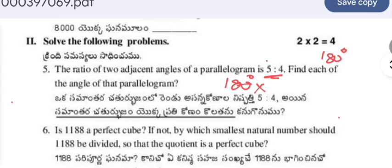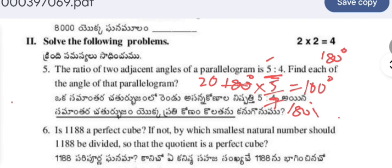The angle relating to 5 is (5/9) × 180 = 100°, so one angle is 100°. The other adjacent angle is (4/9) × 180 = 80°. So the four angles of the parallelogram are 100°, 80°, 100°, and 80°.